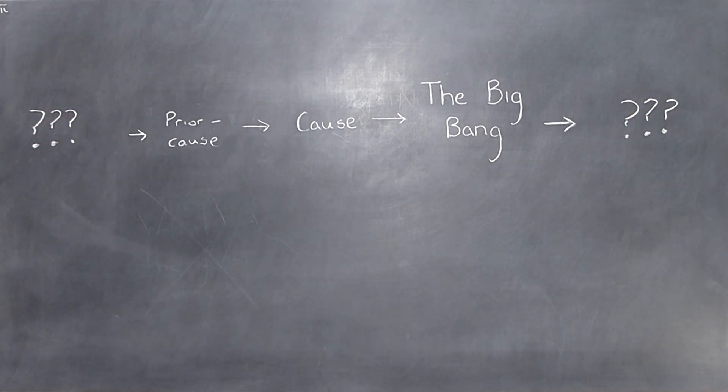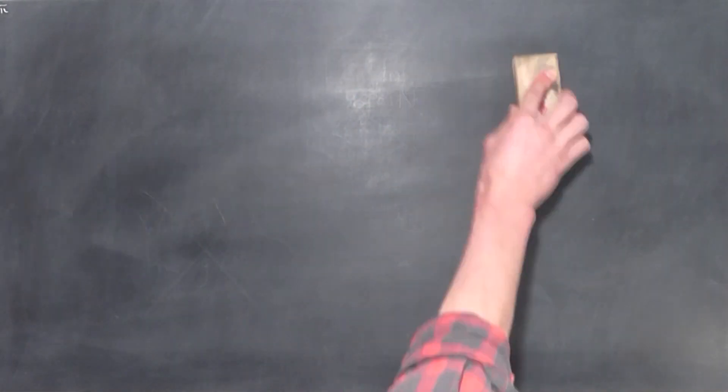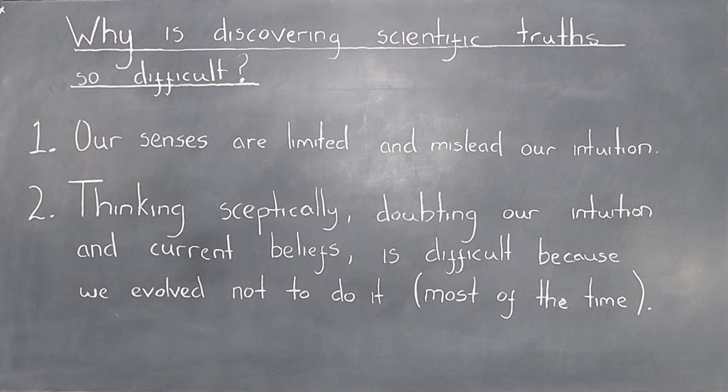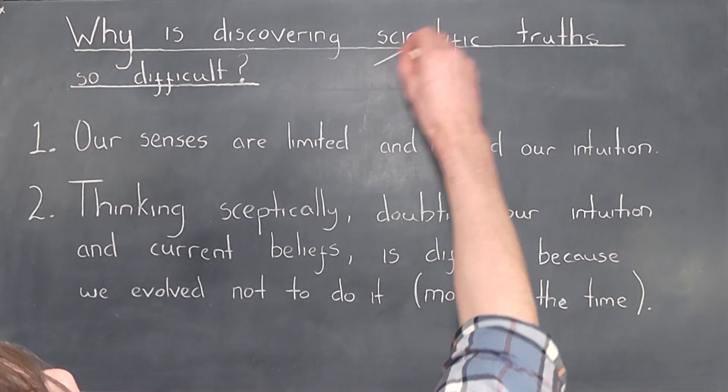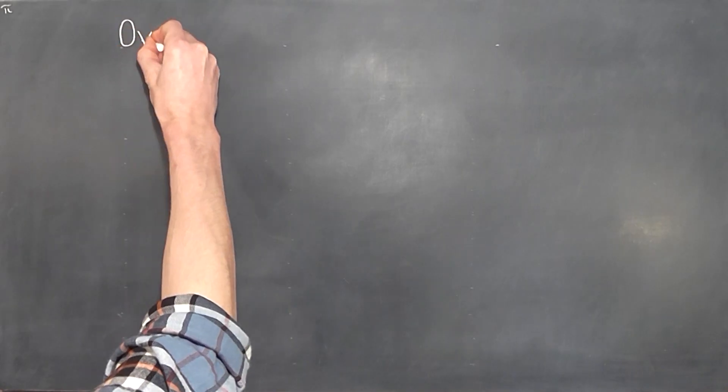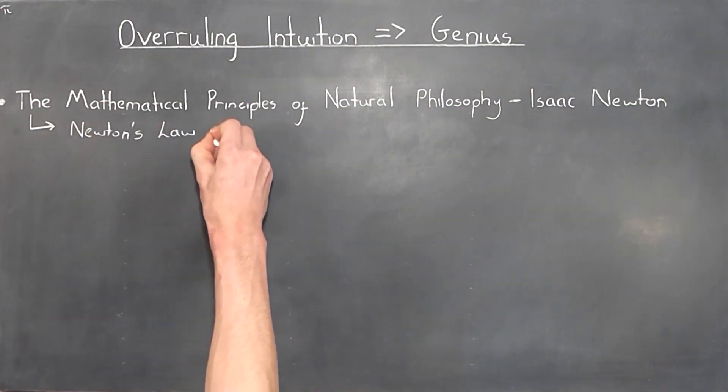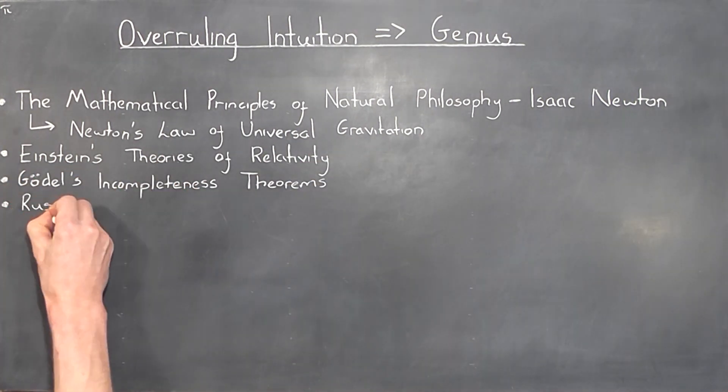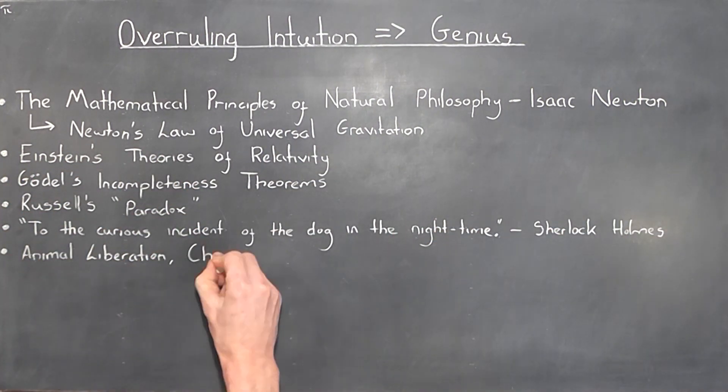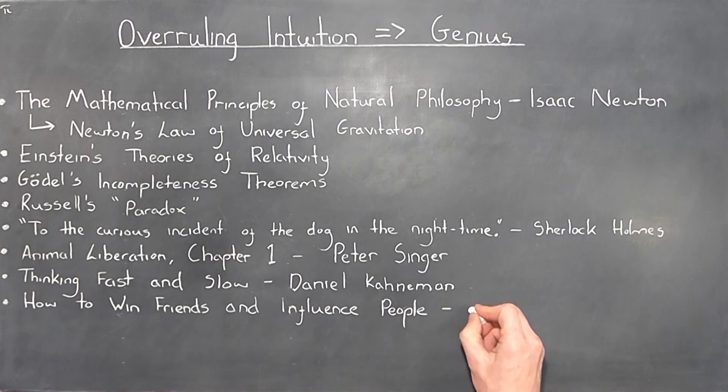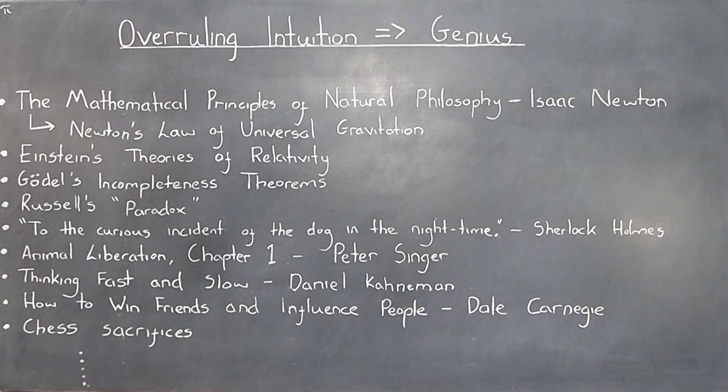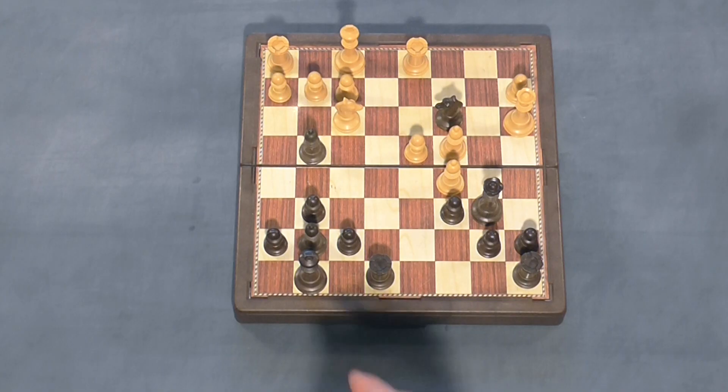At the risk of over-stressing the point, if we take one more step back, we can notice that the same obstacles which make it difficult for us to discover scientific truths also make it difficult for us to discover, well, just about anything. And we can see that the trend of genius being linked to overruling intuition to find deeper truths runs far deeper than just science. To take just one of many examples, the most celebrated moves in chess are often sacrifices, and in particular, queen sacrifices.